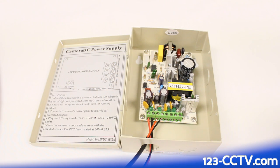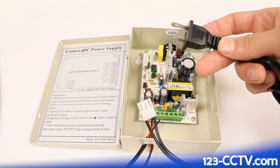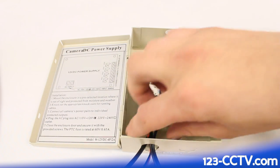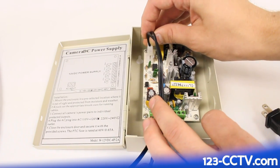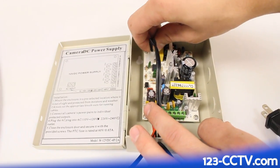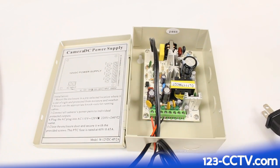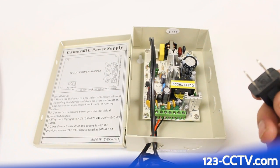After you've secured your connections to your terminal block, you're going to want to take the adapter that plugs into the wall, feed that through one of the holes, plug that into the connector in the top left hand corner of the box, plug this into the wall, and you'll have power to your system.